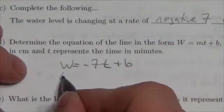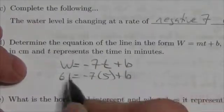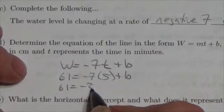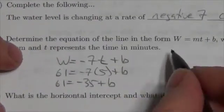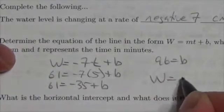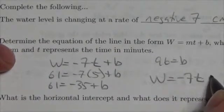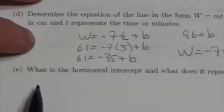So 61 is going to equal negative 7 times 5 plus b. So 61 is equal to negative 35 plus b. Bring the 35 over, so I'll add it to both sides, and that'll be 96 is equal to b. So W is equal to negative 7t plus 96.